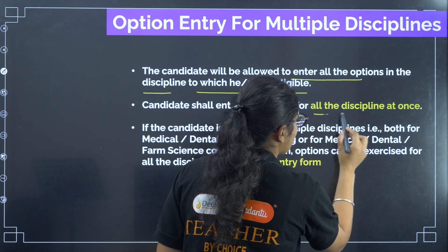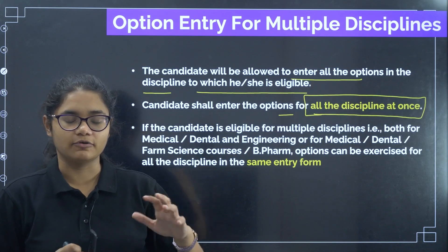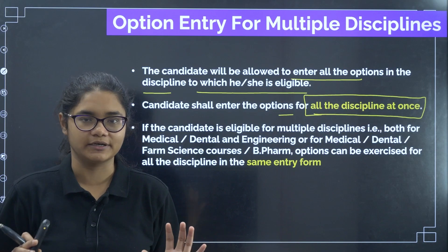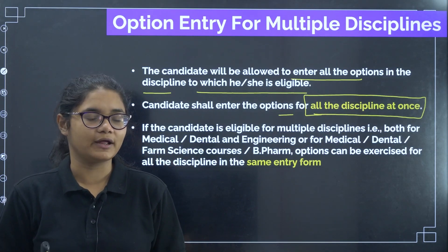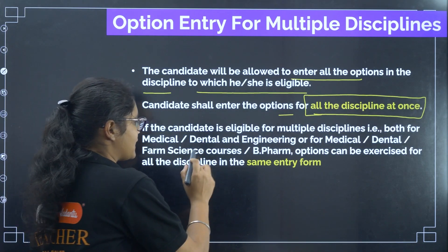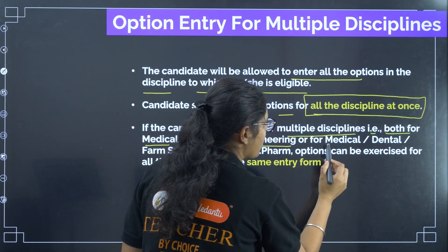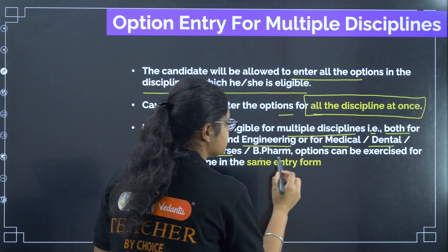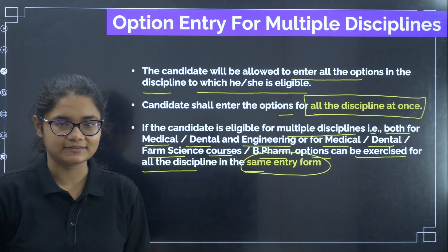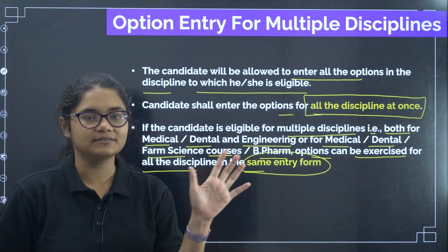Candidates shall enter the options for all disciplines at once — this is very important. There will be no separate option entry for medical, architecture, pharma science, or pharma courses. This is the only option entry and you have to enter for all disciplines at this point of time only. If the candidate is eligible for multiple disciplines — both medical, dental and engineering, or medical, dental, pharma science courses — B Pharma options can be exercised for all disciplines in the same entry form.